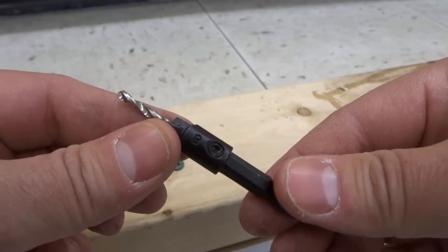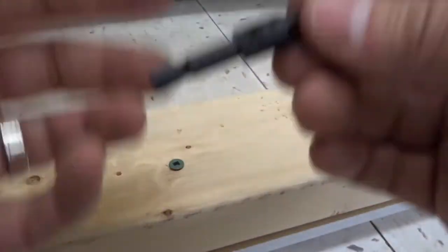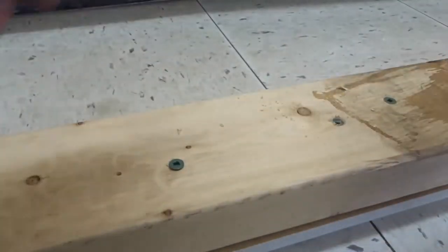This is one example of a countersink drill bit. I'm going to show you exactly how to adjust them and how to use them to countersink screws.